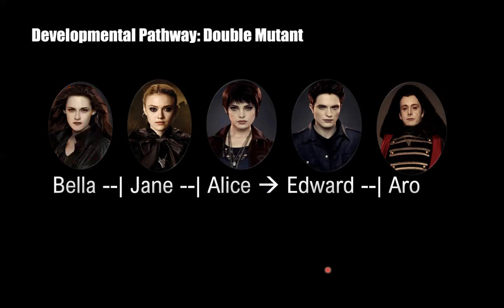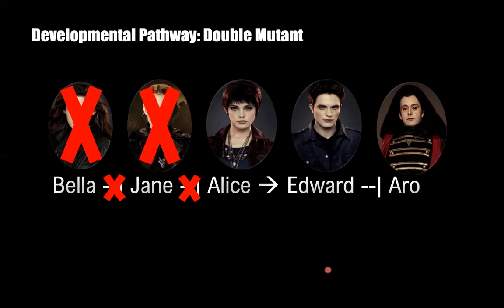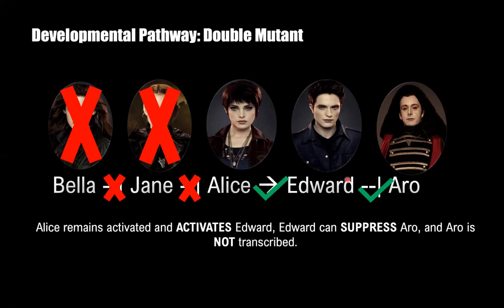In a double mutant situation, if we take out both Bella and Jane, we see that Alice remains activated, meaning she can activate Edward, and Edward can suppress Ro. So Ro is not transcribed and we do not see that phenotype expressed.